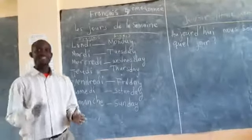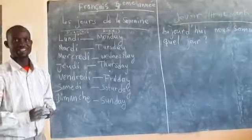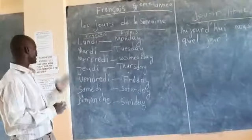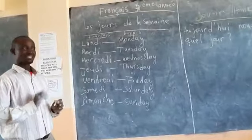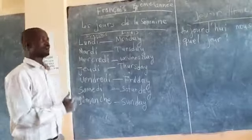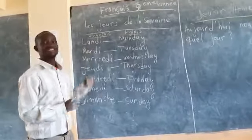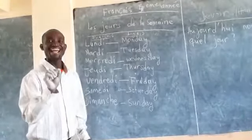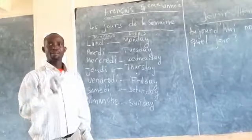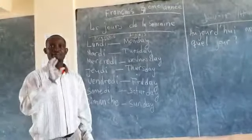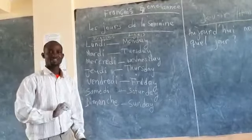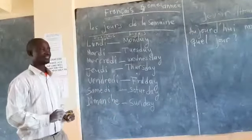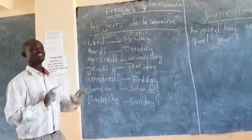Et maintenant, répétez avec moi les jours de la semaine. Now, you can learn how to pronounce the days of the week in French. Let us start — I pronounce, you also repeat after me. Lundi, prononcez avec moi: lundi. Mardi. Mercredi. Jeudi. Vendredi. Samedi. Dimanche.